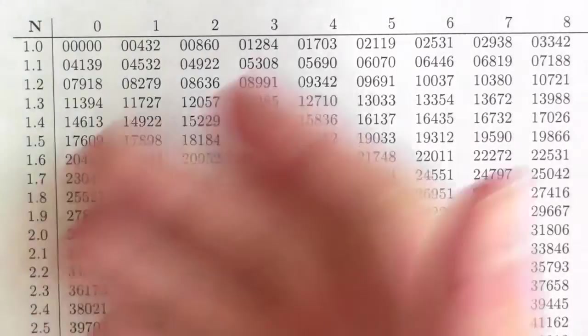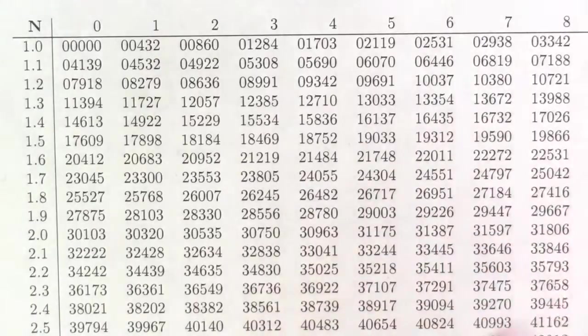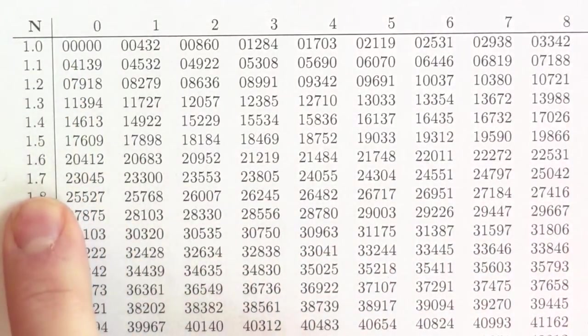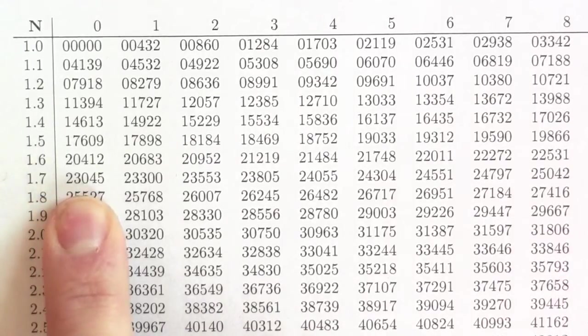You can use this property of logs to multiply very quickly, provided you have a log table. And I do have a table of logarithms. Here's my table. Let's multiply 17 by 37. So, instead of looking up 17, I'm going to look up 1.70 in my table. And I find the log of 1.70 is about .23045.